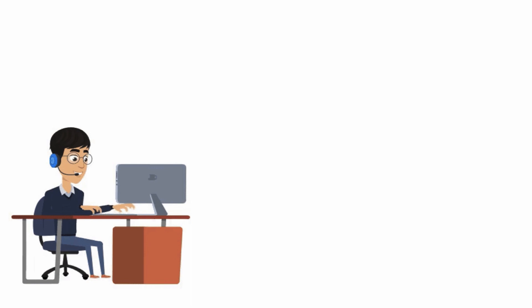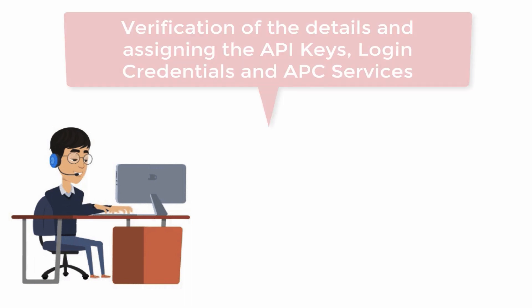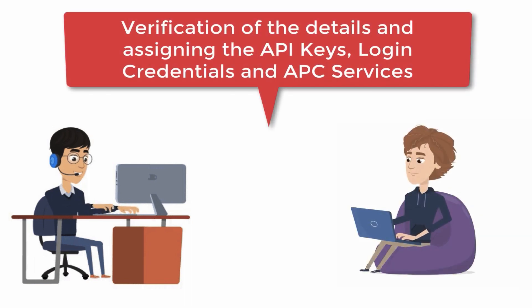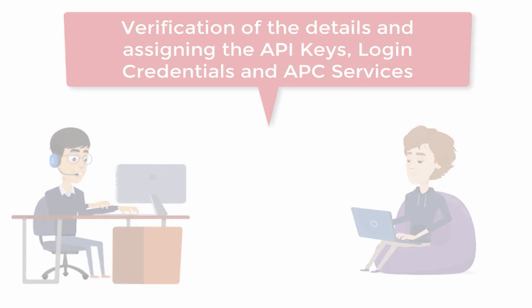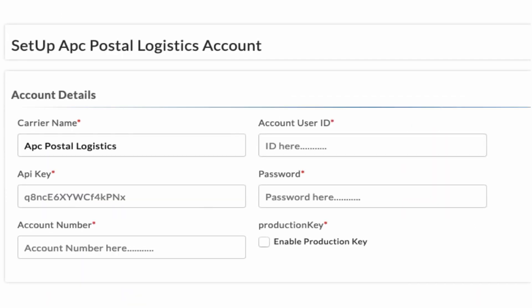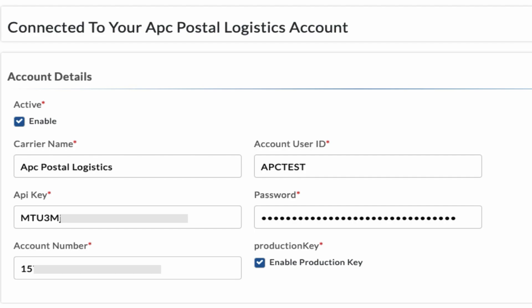You'll then get the API key, login credentials, and APC services set up, which will be emailed to you to complete the integration. Once you get the details, you can enter them in the app, enable the production key, and save. Your APC Postal account is now successfully integrated.